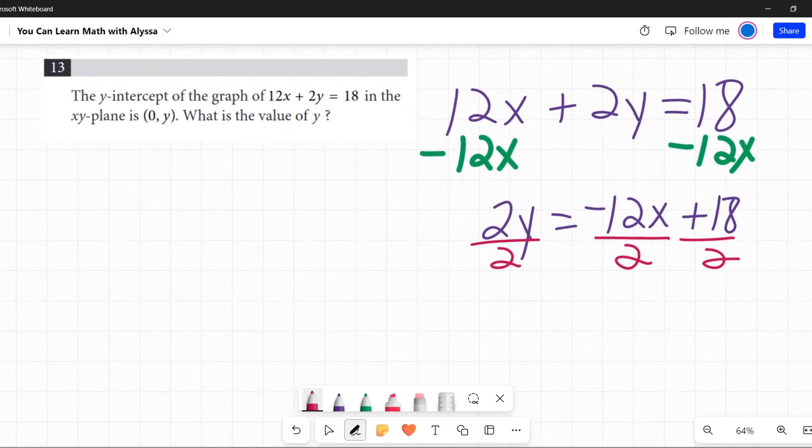So on the left, 2y divided by 2, that cancels out. I'm just left with y. On the right, negative 12x divided by 2 is negative 6x. 18 divided by 2 is 9.